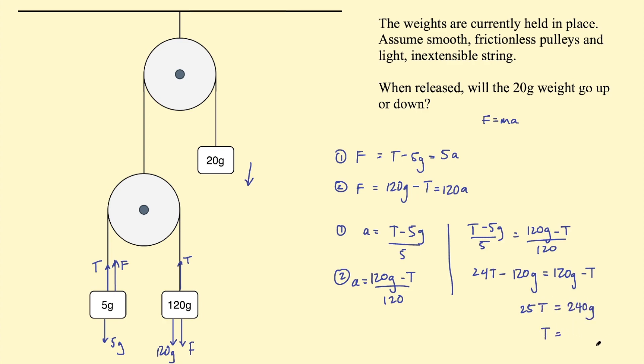And then T equals 240 divided by 25 is 9.6 G. So that is the tension force here on each part of the string, so 9.6 G.